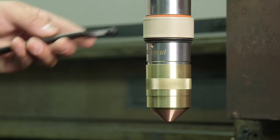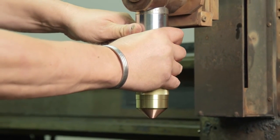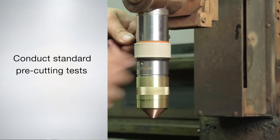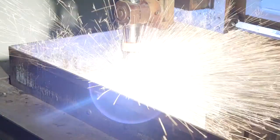Use a C-spanner or strap wrench to securely tighten the torch base in the mounting tube. Conduct your standard pre-cutting tests, including a gas purge, to ensure all moisture has been removed. You are now ready to cut.